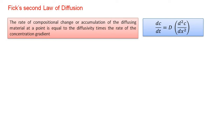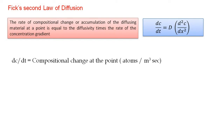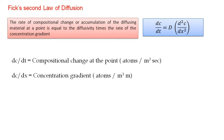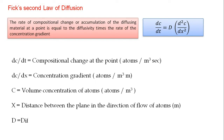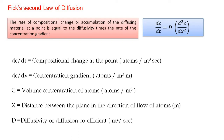Let's understand each term one by one. dc/dt is the compositional change at a point, or it is the accumulation of the diffusing material, expressed in terms of atoms per meter cube per second. The concentration gradient is dc/dx, expressed in terms of atoms per meter cube per meter. c is the volume concentration of the atoms in atoms per meter cube. x is the distance from the plane in the direction of diffusion. D is the diffusivity, also called the diffusion coefficient or coefficient of diffusion.